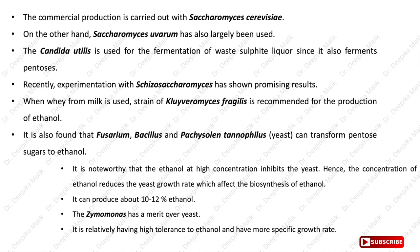When whey from milk is used, a strain of Kluyveromyces fragilis is recommended for ethanol production. It is also found that Fusarium, Bacillus and Pachysolen tannophilus, another yeast, can transfer pentose sugars to ethanol. Notably, ethanol at high concentration inhibits yeast, reducing its growth rate and affecting biosynthesis. Yeast can produce about 10 to 12% ethanol. Zymomonas has merit over yeast as it has relatively high tolerance to ethanol and a higher specific growth rate.